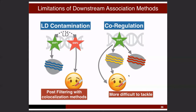The second problem is co-regulation. If one SNP affects the expression of two different genes, and only one of them affects disease risk, there is no way to distinguish between those genes using PrediXcan, SMR, or TWAS. This confounding can only truly be resolved by actually knocking down the gene experimentally and observing the phenotypic consequences.